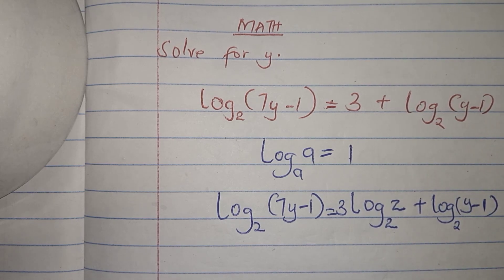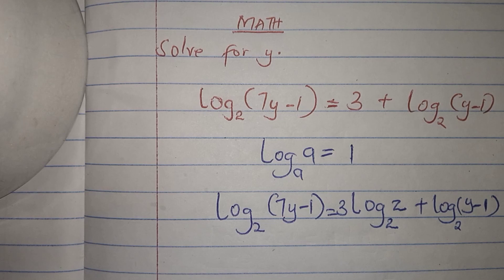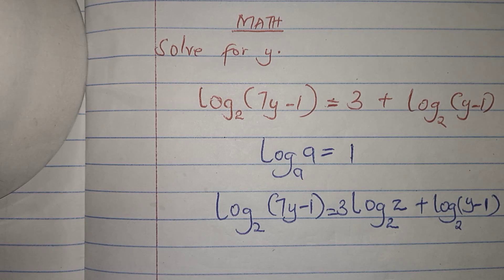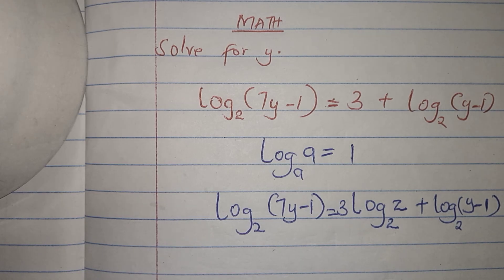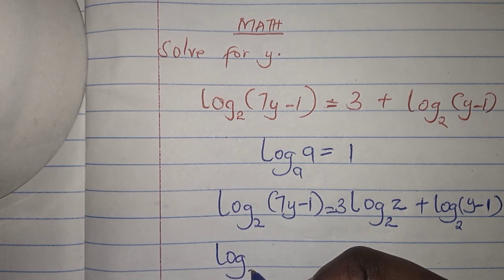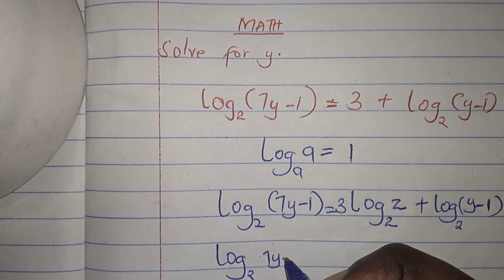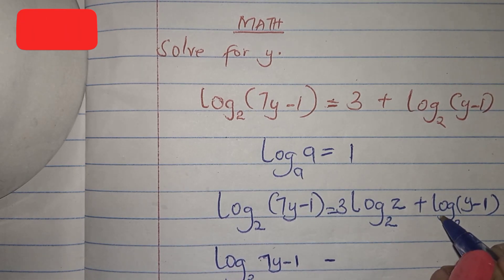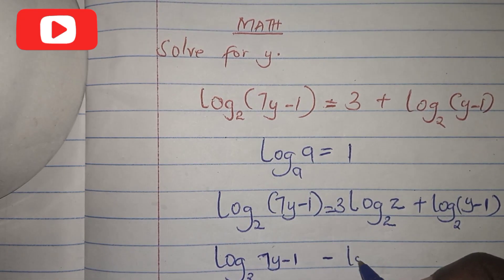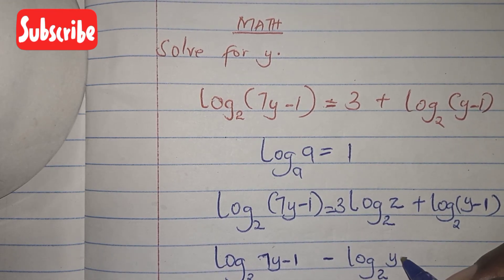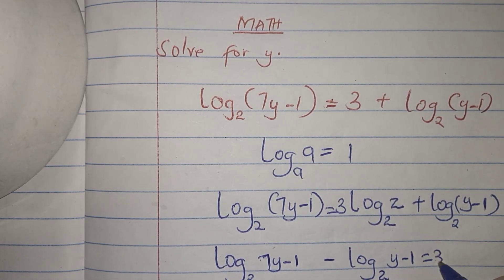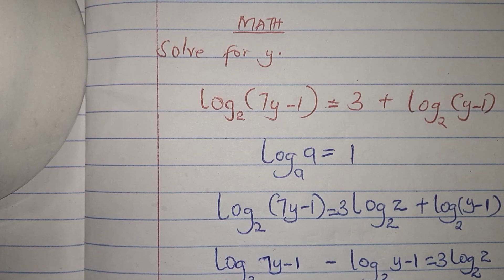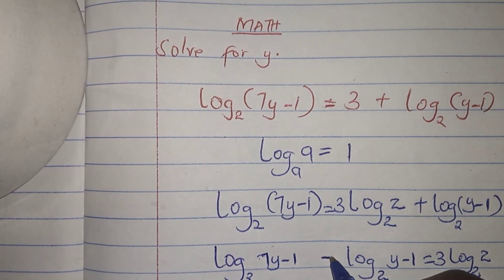The next step: because we have y on this side and we also have y on this side, I can bring them to the same side. So I'll write log base 2 (7y - 1) minus log base 2 (y - 1) equals 3 log base 2 of 2. This is the next step.